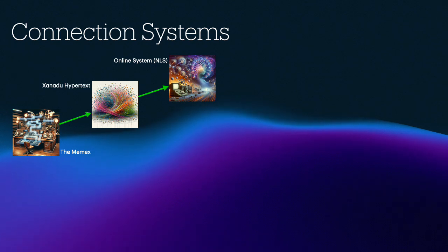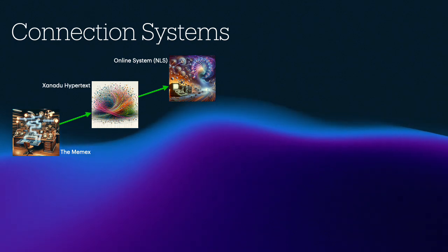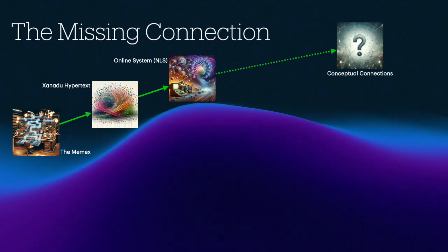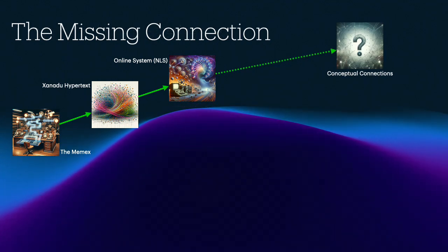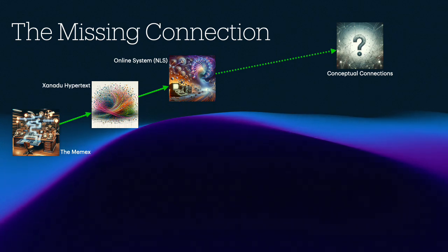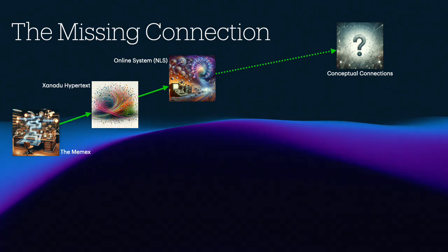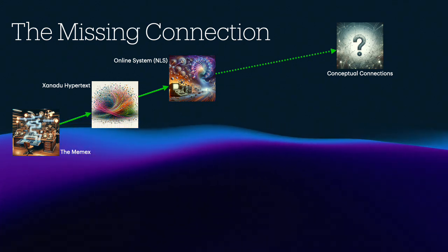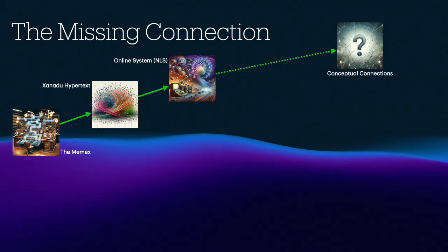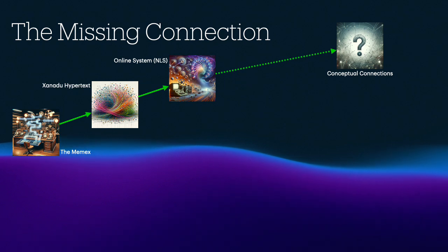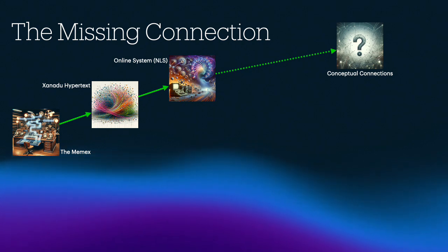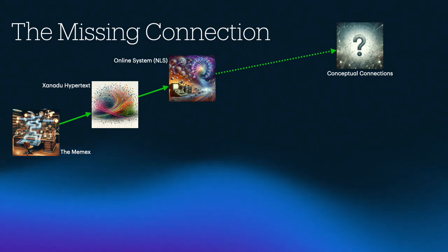The one thing the Memex, Xanadu, and the online system had in common was that they were all ideas centered on connection, not content, because that was where the real problem was. Of the three, Engelbart came the closest to actually realizing his goal. In 1968, he demonstrated the mouse, the graphical user interface, and early versions of video conferencing and hypertext. All were in service to his project of Augmenting Human Intellect. This mother of all demos stunned an audience used to teletypes and punch cards. However, what they took away from the experience was not the connection between ideas as much as how Engelbart's ideas changed human-computer interaction. Connecting ideas was still in there, but it faded to the background.